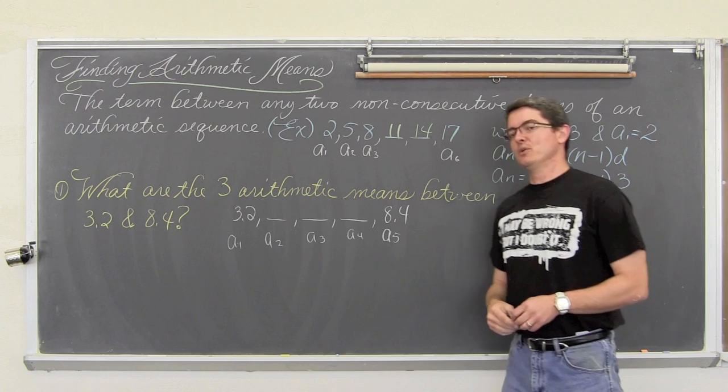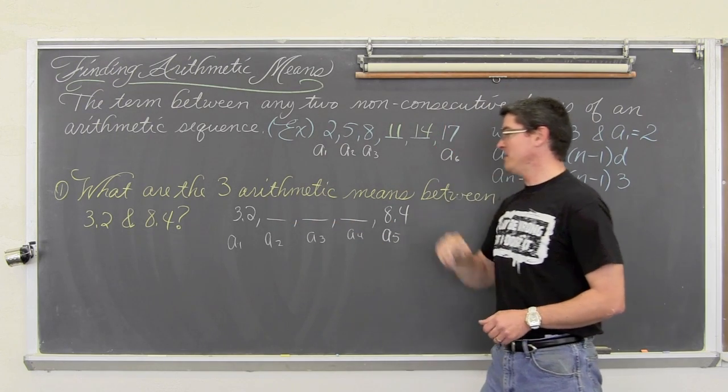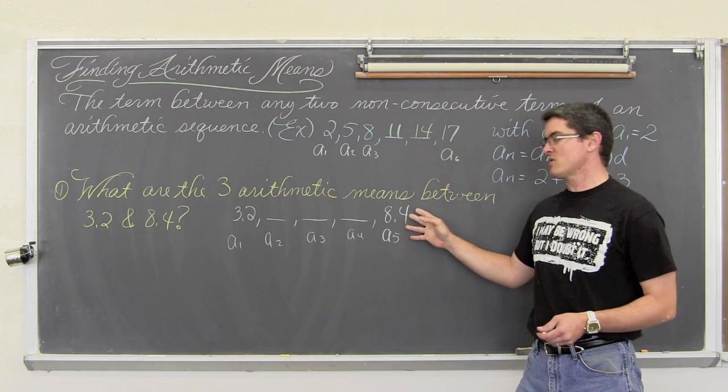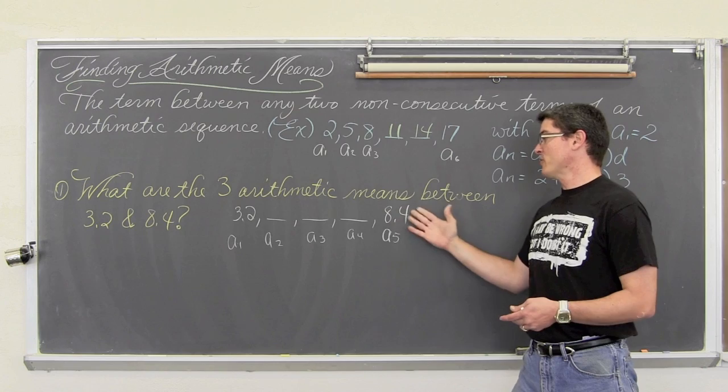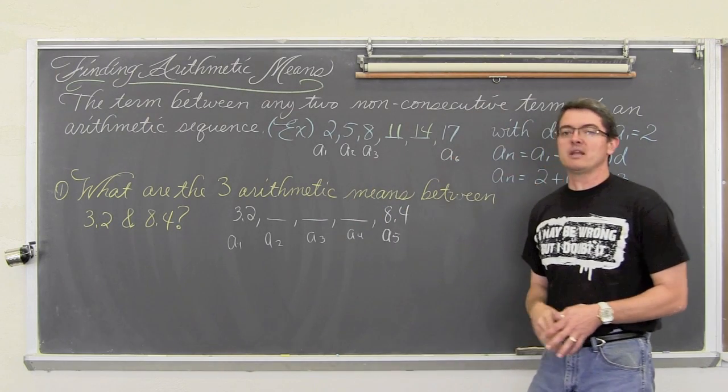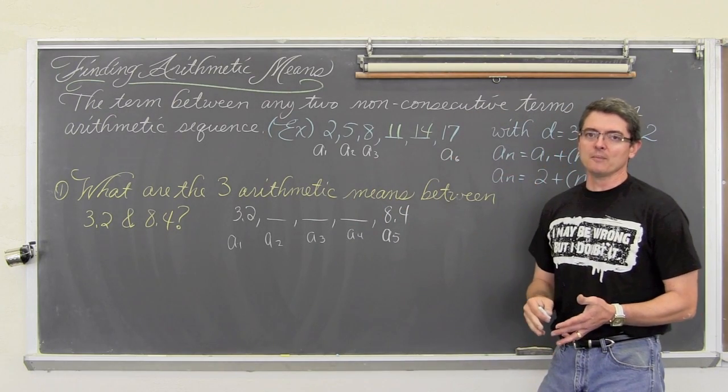So we have a sub 1 is 3.2, we have three arithmetic means, and then finally our last term that we are concerned about, the first term after the missing arithmetic means of 8.4.